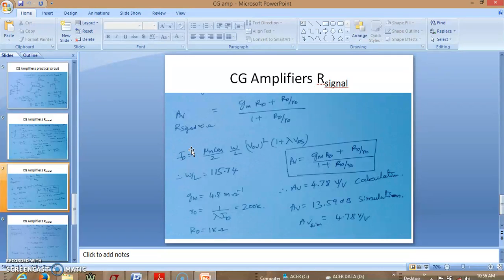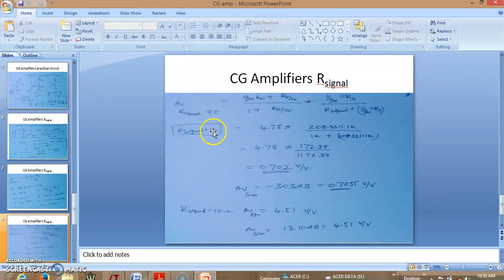So now this is with r signal is equal to 1 kilo ohm. The expression changes so this 4.78 is multiplied by this extra term which is 1 over gm in parallel with rs divided by r signal plus 1 over gm plus rs. So that's what we found in the previous video.